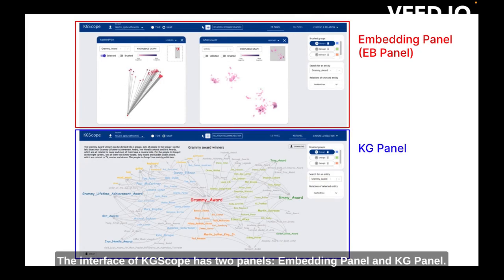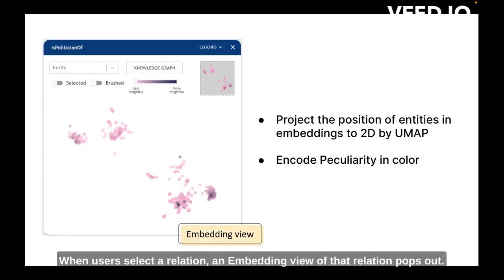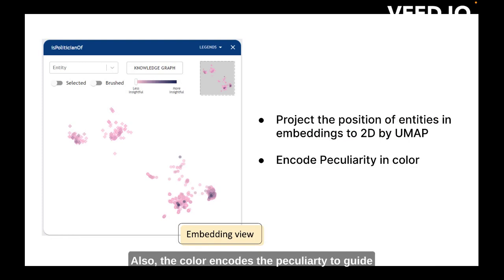The interface of KG Scope has two panels: the Embedding Panel and the KG Panel. At the beginning, users can directly search an entity from a search box or open a schema panel, which provides an overview of the knowledge graph. When users select a relation, an embedding view of that relation pops out. In the embedding view, entities are projected in a 2D scatter plot, and color encodes peculiarity to guide users toward the interesting parts of the graph.